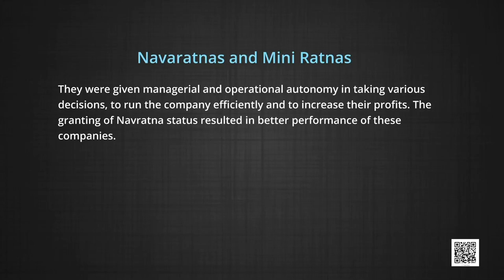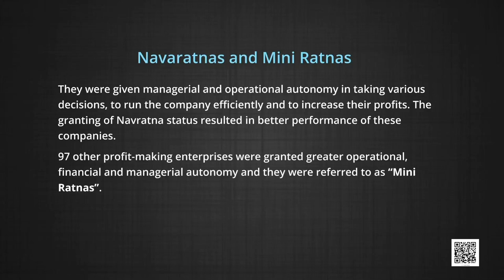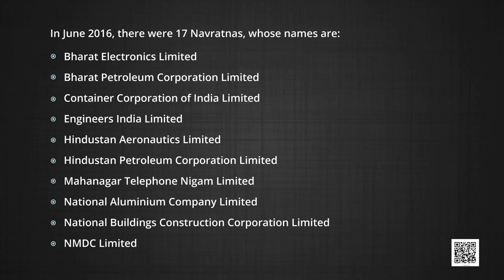The granting of Navaratna status resulted in better performance of these companies. Apart from this, 97 other profit-making enterprises were granted greater operational, financial, and managerial autonomy and they were referred to as Miniratnas. In June 2016, there were 17 Navaratnas which are listed.